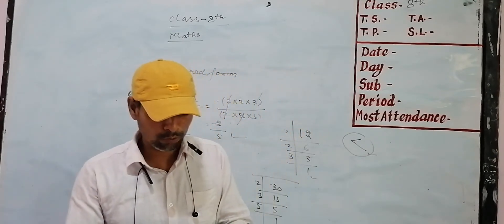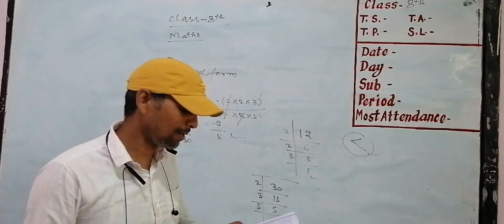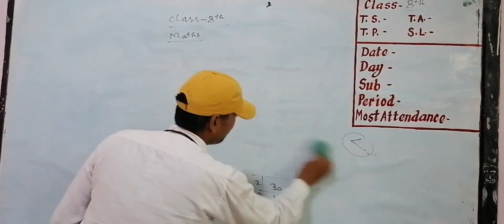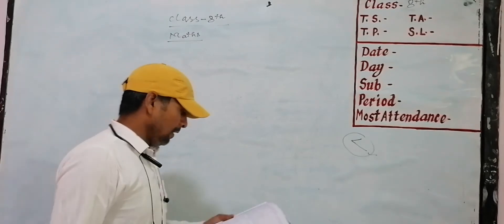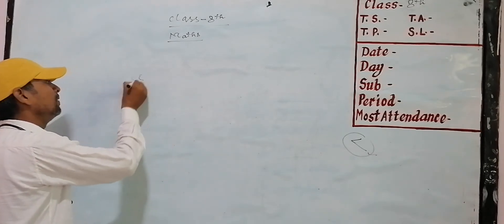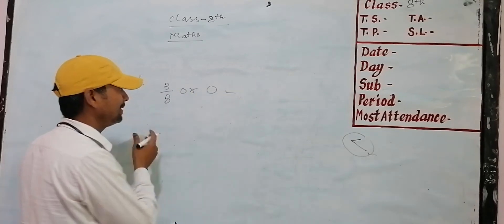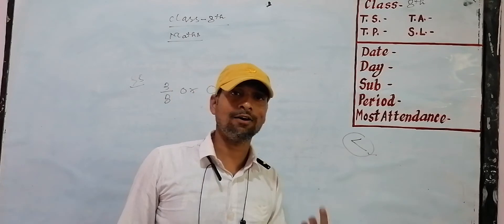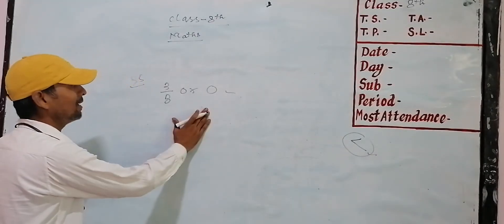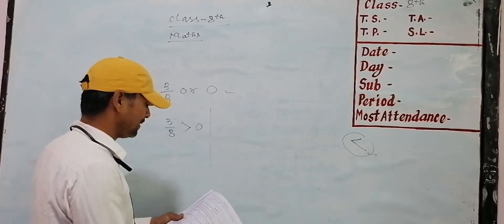Question number 5: which of the two rational numbers is greater in the given pair? The first pair is minus 3 by 8 and 0. If a number is greater than 0 it is positive; here, comparing 3 by 8 to 0, since 3 is greater than 0, the result is determined.